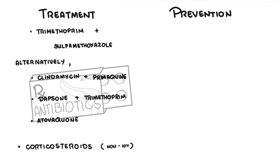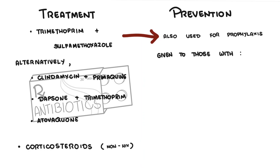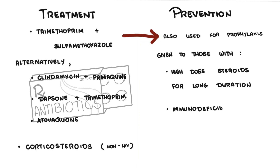Prevention of Pneumocystis pneumonia is very important, and this is done also with trimethoprim and sulfamethoxazole. Prophylaxis is given to those with a weak immune system, including those on high-dose steroids for a long duration and those on other immunosuppressants. Prophylaxis is also given to those with an immunodeficiency disorder — whether acquired or congenital — and to those who already had the infection in the past, as secondary prophylaxis to prevent recurrence.